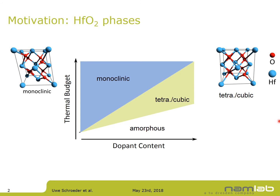If you would have asked me 10 years ago whether hafnium oxide is ferroelectric or not, I would have told you it's a centrosymmetric material. In the undoped case you have the monoclinic phase of hafnium oxide, and in the doped case you would have the tetragonal cubic phase. Both are completely centrosymmetric, and there shouldn't be any ferroelectric properties in the material.